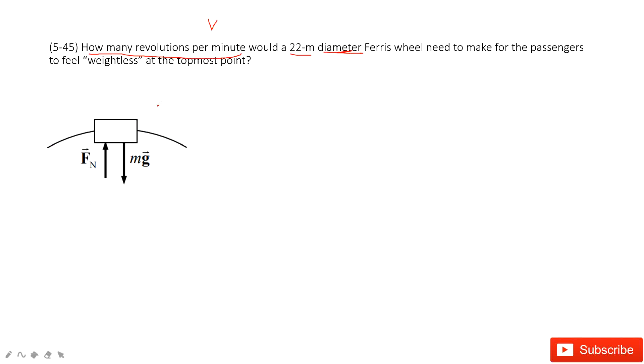First thing, we do the force analysis. Normally we have gravity and the normal force to support the passengers. So the centripetal force is just the gravity minus the normal force, because the net force is pointing to the center and equals mass times velocity squared divided by r.